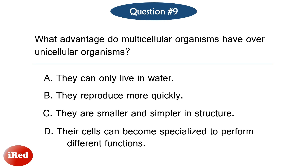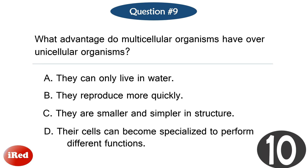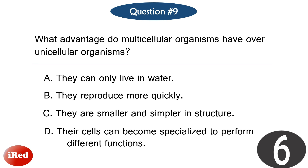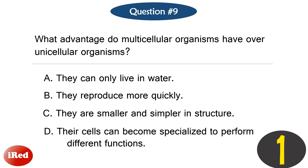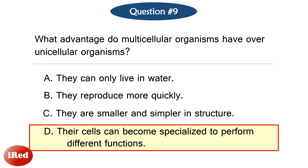Question number nine. What advantage do multicellular organisms have over unicellular organisms? The correct answer is letter D, their cells can become specialized to perform different functions.